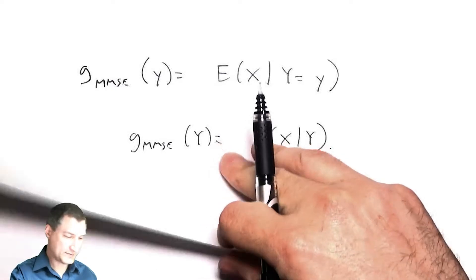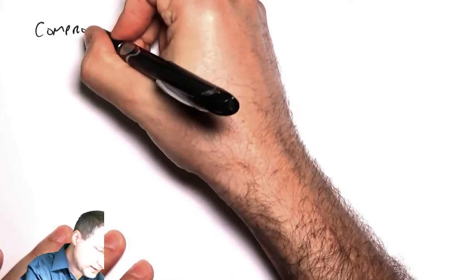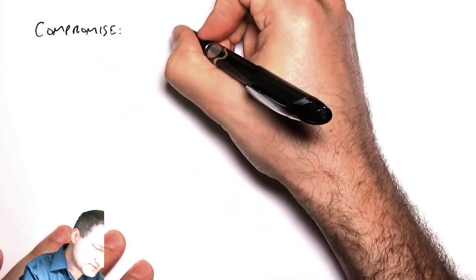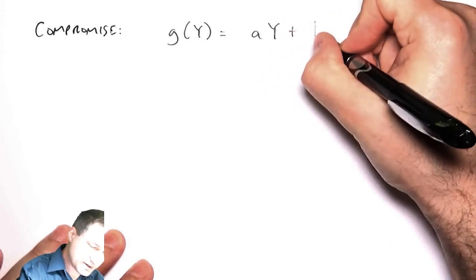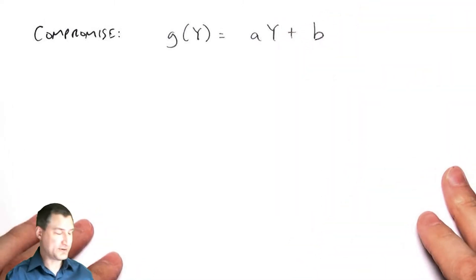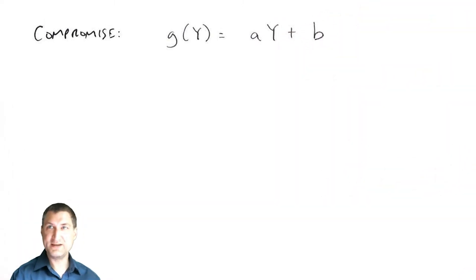The problem is that this is kind of a nasty thing to compute in practice. So the compromise to things that are easy to compute is I'm gonna restrict myself to the class of linear functions. I'm gonna say okay, I'm gonna just let you use any function aY + b, that's it.